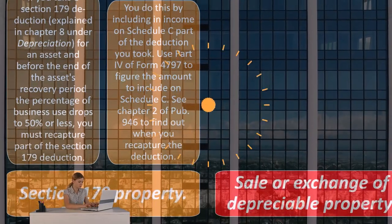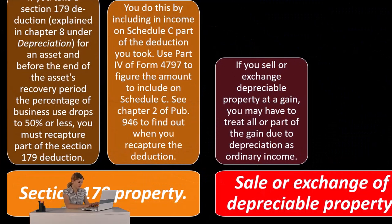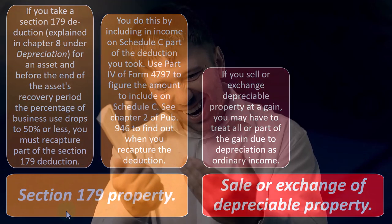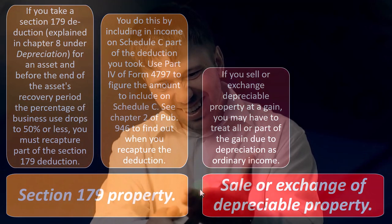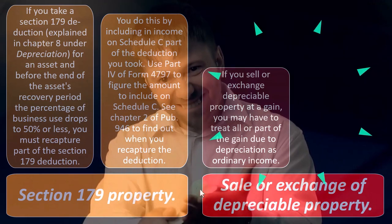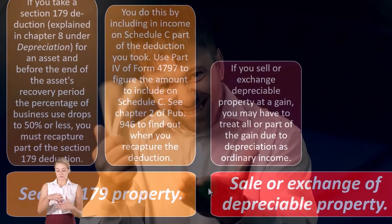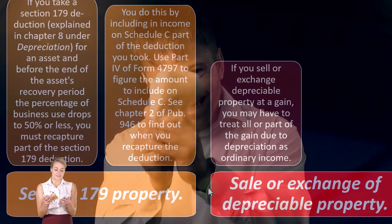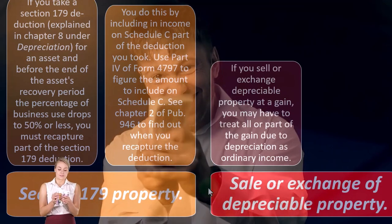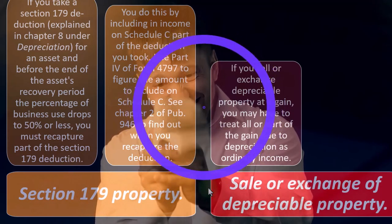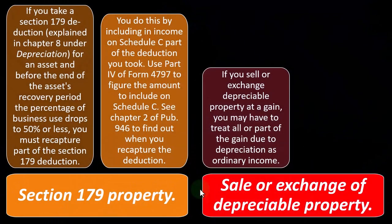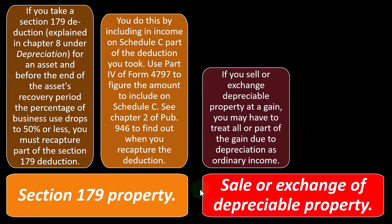Sale or exchange of depreciable property: if you sell or exchange depreciable property at a gain, you may have to treat all or part of the gain due to depreciation as ordinary income. We talked about this a little bit in prior presentations when we looked at distributions and possible gains. Normally ordinary income for a business is when you sell inventory or goods and services. If you have depreciable property that you're not selling as inventory — you're using it to generate revenue in the business, like using a forklift — and then you have to sell the forklift.